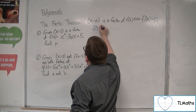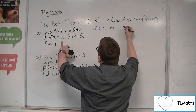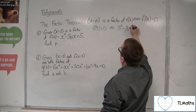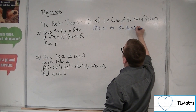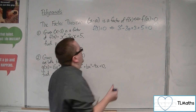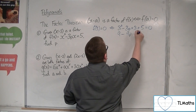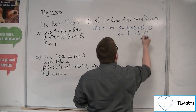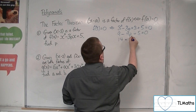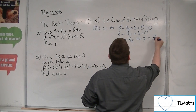So f of 3 must be 0. Substituting in 3: 3 squared take away 3p times 3 plus 5 must equal 0. So 9 take away 9p plus 5 equals 0, giving us 14 equals 9p, so p is equal to 14 ninths.